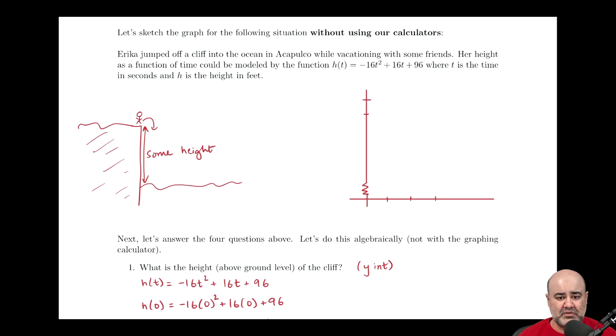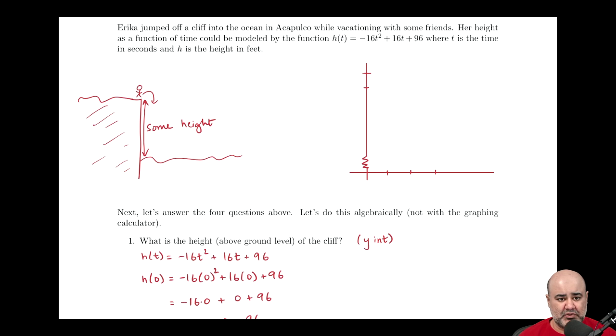So let's see how we would answer these questions looking at an example. So we have this individual who's luckily in Acapulco, and she's on vacation, and she's doing cliff diving, because why not? Her height as a function of time, so height is the output variable, time is the input variable, is modeled by this function.